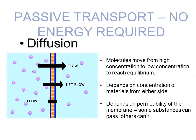With passive transport, there is no energy required. Make sure you get that down — there are three kinds of transport, and passive transport does not require energy. As you can see in the diagram, there's just a flow from an area of high concentration into an area of low concentration. Those purple dots are highly concentrated on one side, and you can see they are moving from the area of high concentration to low concentration.